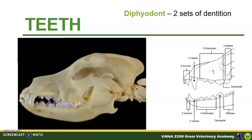The premolars and molars are the teeth caudal to the canine teeth and are collectively referred to as the cheek teeth. They are grinding teeth forming the sides of the dental arch. Premolars are anterior to the molars, and the molars are found only in the permanent dentition. The upper fourth premolar and the first lower molar teeth are the largest teeth and are referred to as the carnassial teeth or the sectorial teeth.